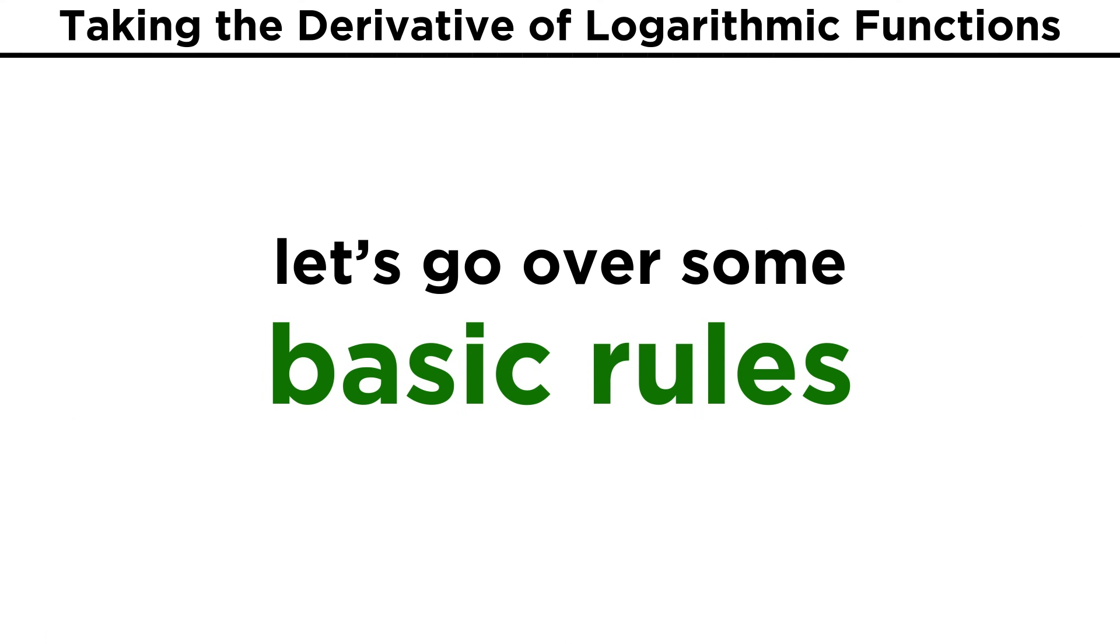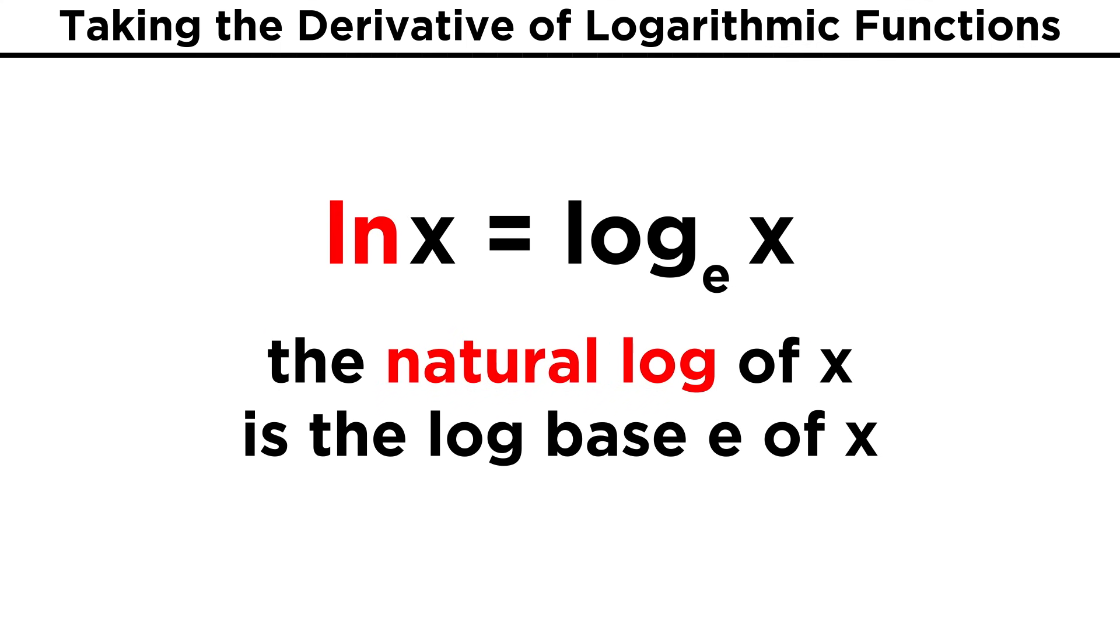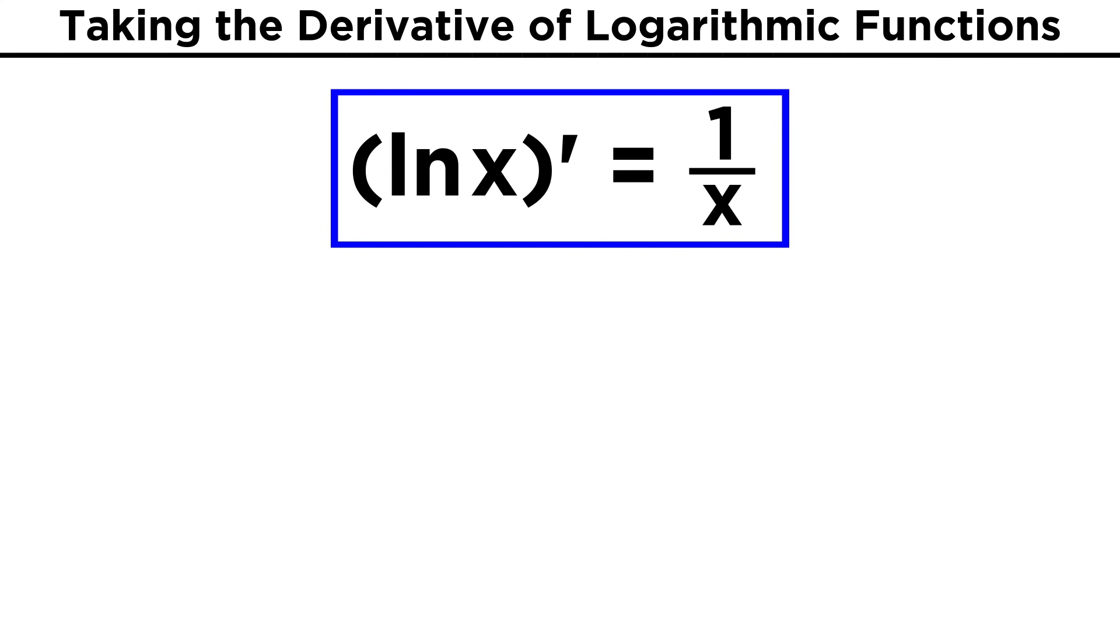Rather than going through a lot of derivations, let's just highlight a handful of rules that we can count on. First let's recall that the natural log is the logarithm with base E. As it happens, the derivative of the natural log of X is equal to one over X.